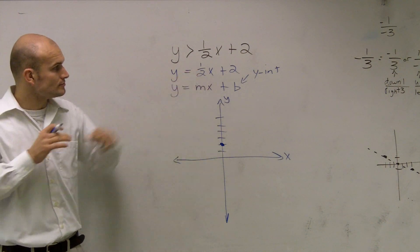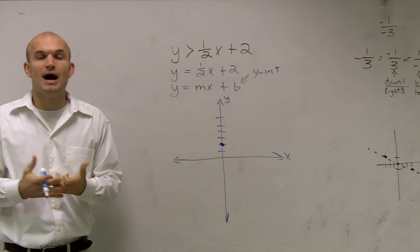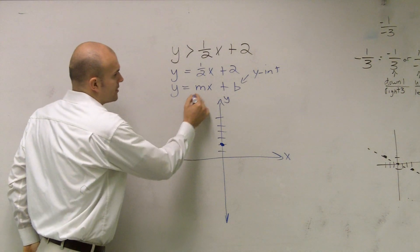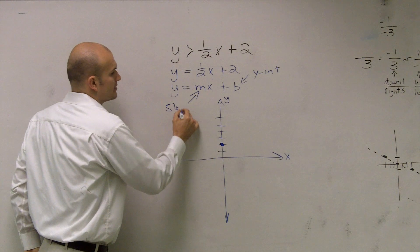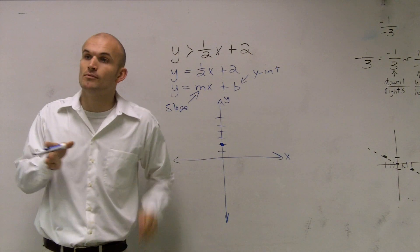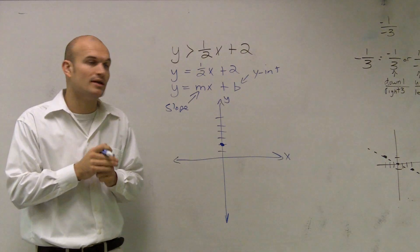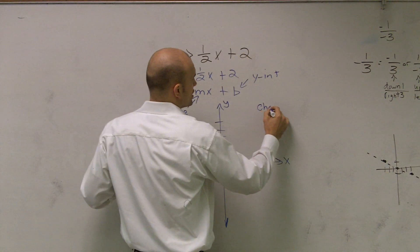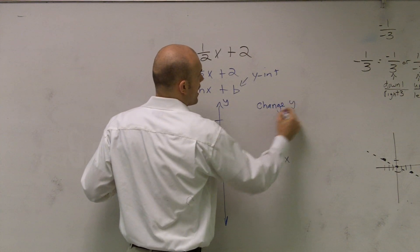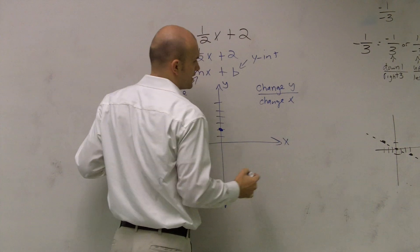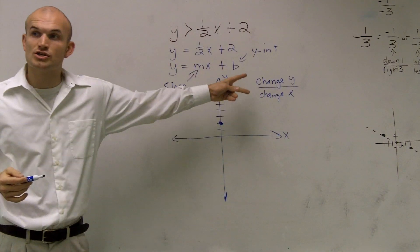So now the next thing we need to do is now we need to determine, well, how do we get to our next point? We need to look at the slope. Remember, the slope is our number that is in front of our variable x. So the slope tells us how to get from one point to our next point. And remember, our slope is a ratio. It's your change in your y-coordinates over the change in the x-coordinates, all right? That's what we call our slope.